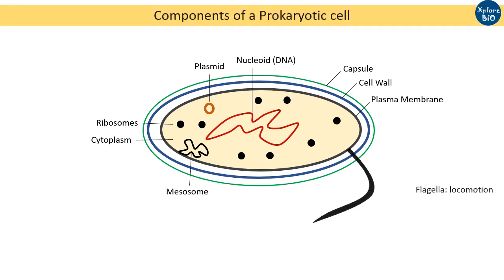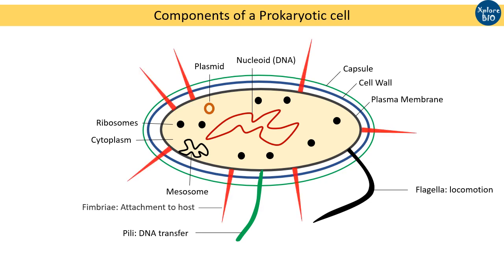Flagella helps in locomotion. It is made up of flagellin and is powered by a proton pump. Pili or the sex pili helps in reproduction through conjugation; transfer of genetic material occurs through this pili. Fimbriae are the numerous hair-like structures that help in attaching the bacteria to the host cell. These are the major components of a prokaryotic cell.